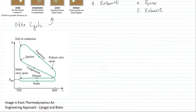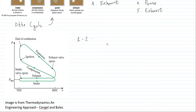The compression stroke represents the change in pressure and volume. We will name that process as 1 to 2. Point 1 to point 2 is what we call the isentropic compression.